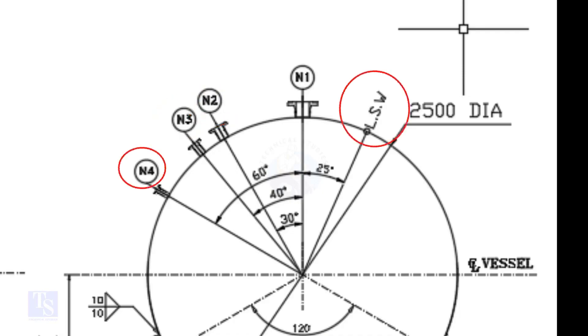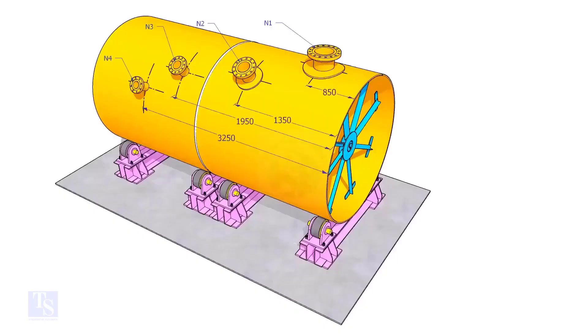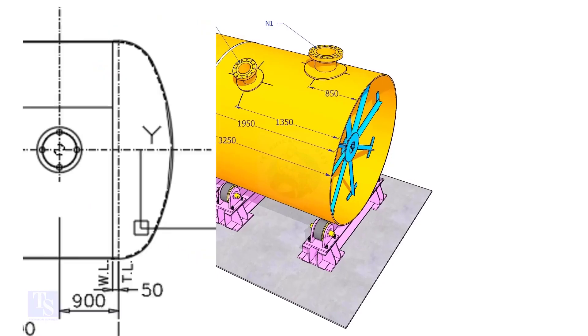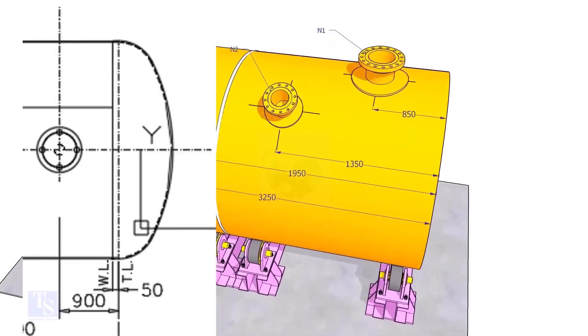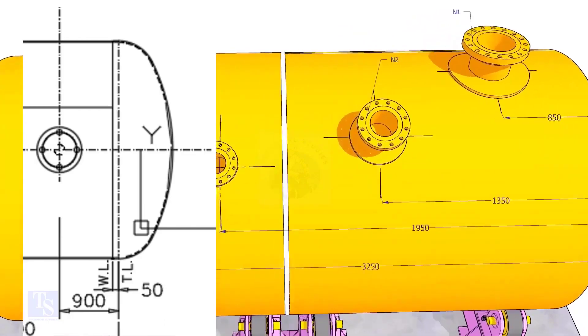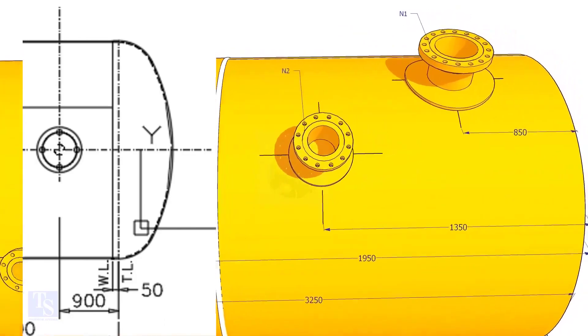Nozzle N1 is turned 25 degree from LSW. As the straight face 50mm is on the dish end, we need to subtract 50mm from the overall dimension.